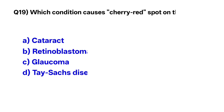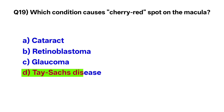Question number nineteen: Which condition causes a cherry red spot on the macula? The correct option is D, Tay-Sachs disease.